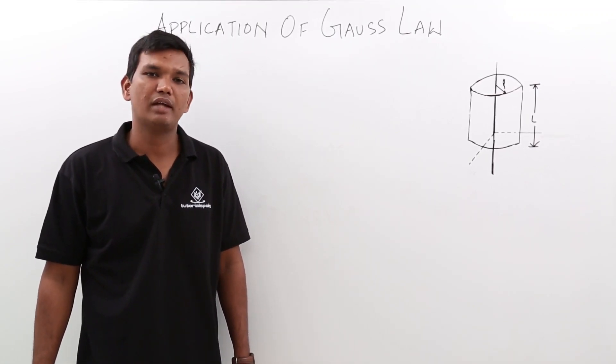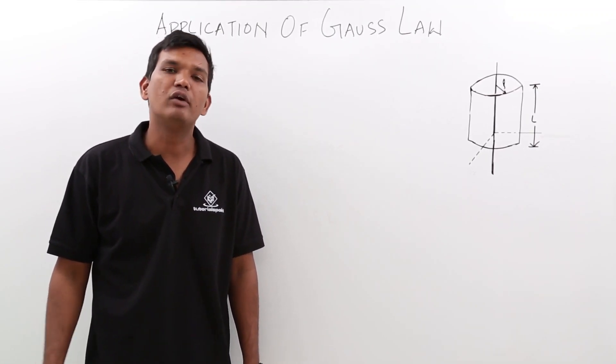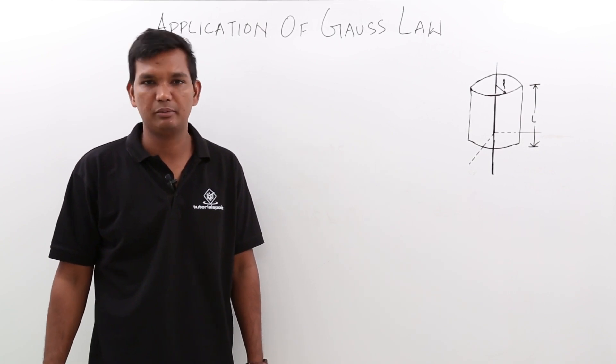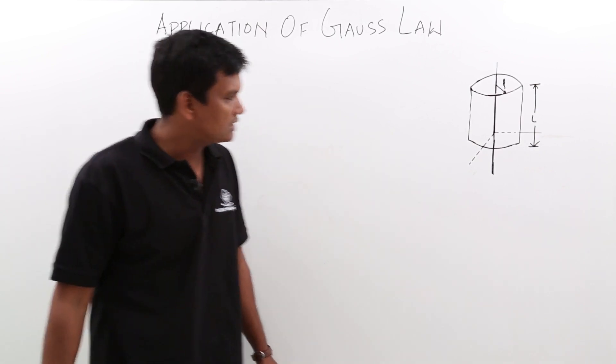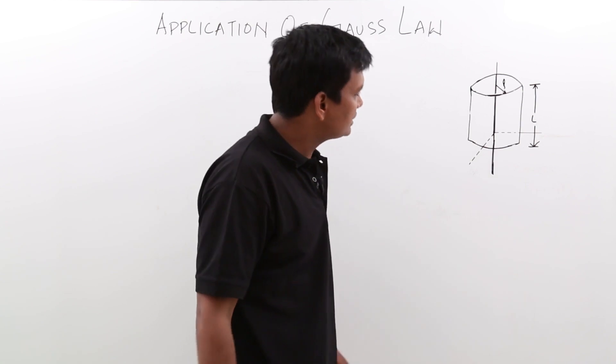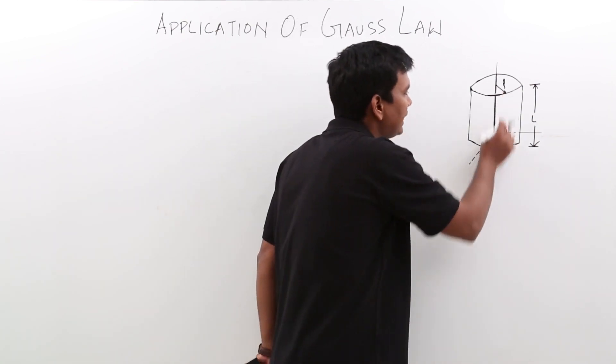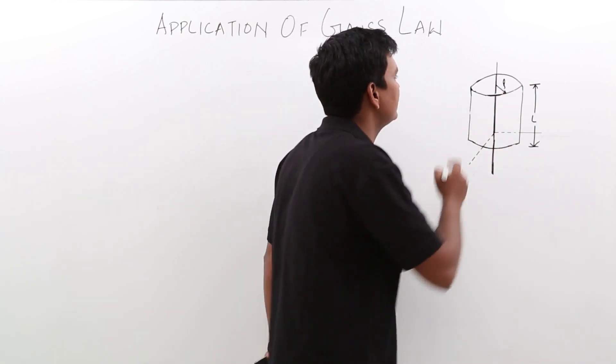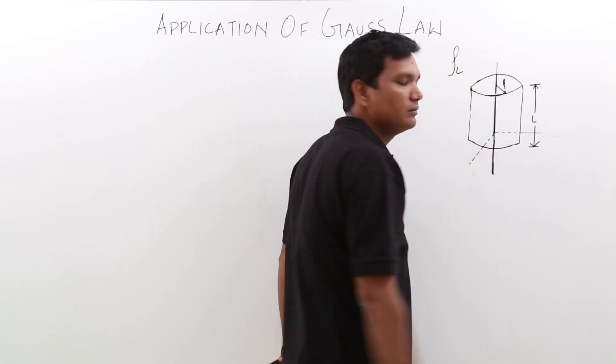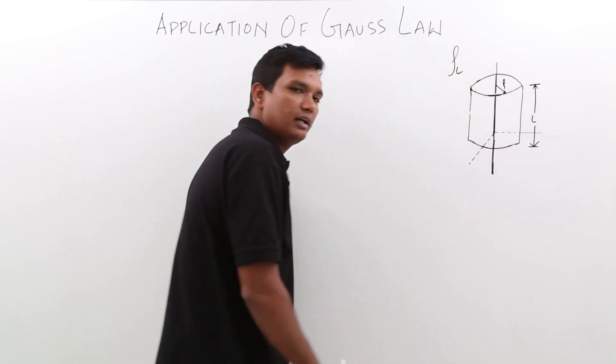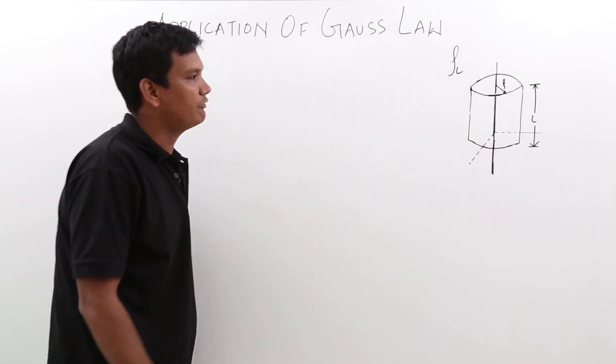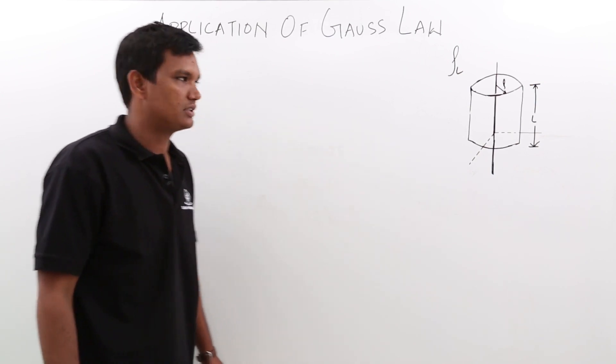In this class we will discuss the application of Gauss law. We have already seen what is Gauss law in the previous lectures. Let us try to understand this figure. It is given that there is a line having the line charge density as rho l of infinite length and we have to find the surface charge density.